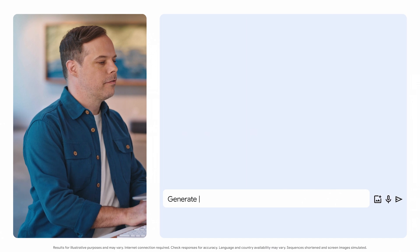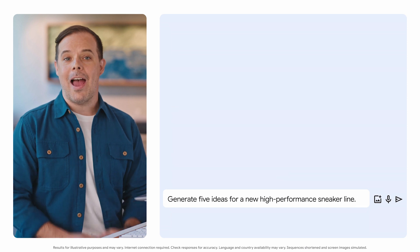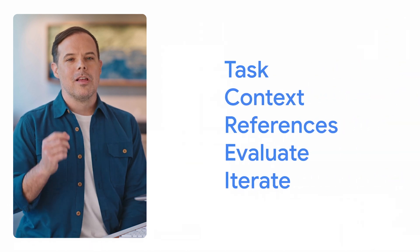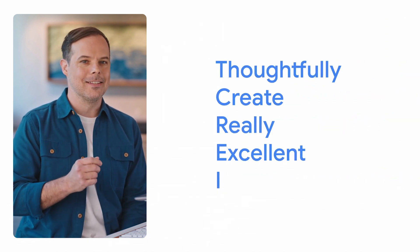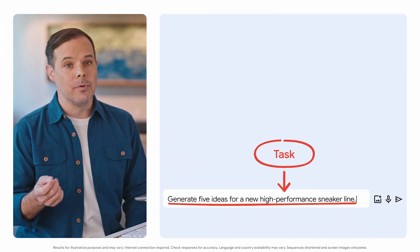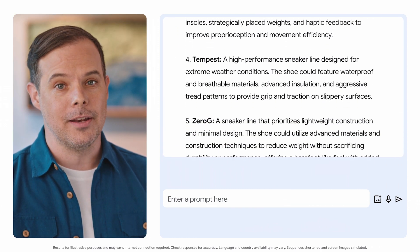Let's put the framework into action. We'll log into Gemini and then use the tool to help us brainstorm ideas for a new high-performance sneaker line. First, let's add the task: 'Generate five ideas for a new high-performance sneaker line.' We've asked Gemini to complete a task, but we're not really applying the prompting framework yet. This prompt is all task and nothing else, which might give us an output that's too broad and not very useful. Still, Gemini generated five ideas with unique names and descriptions — this isn't a bad start, but we can do better.